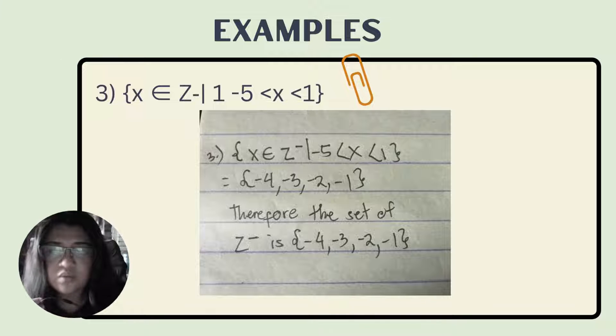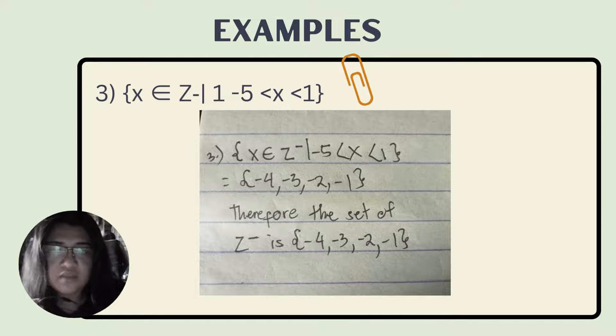If you're asking again where I got negative 4, negative 3, negative 2, negative 1, I got it from the range from negative 5 to positive 1. What's being asked here is how can we get all the negatives. Therefore, the set of negative Z is negative 4, negative 3, negative 2, and negative 1. And the final answer is negative 4, negative 3, negative 2, negative 1. That's all.